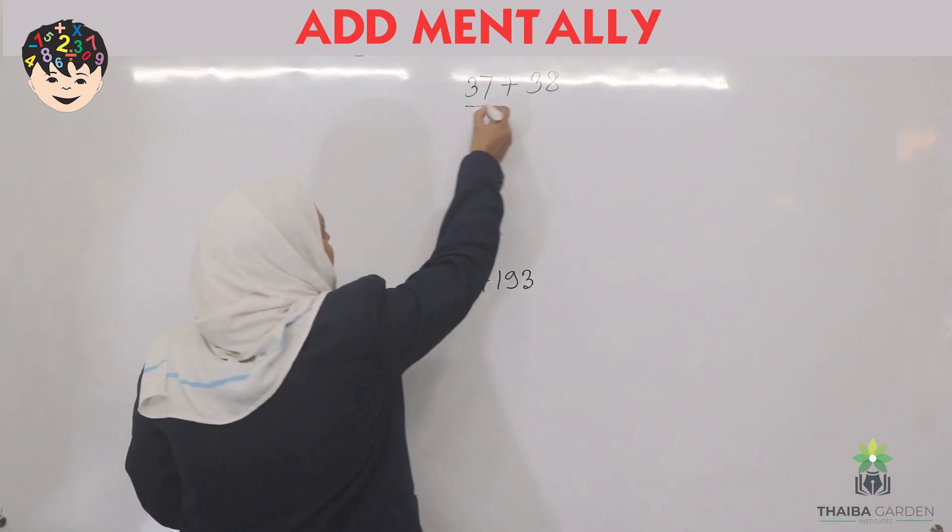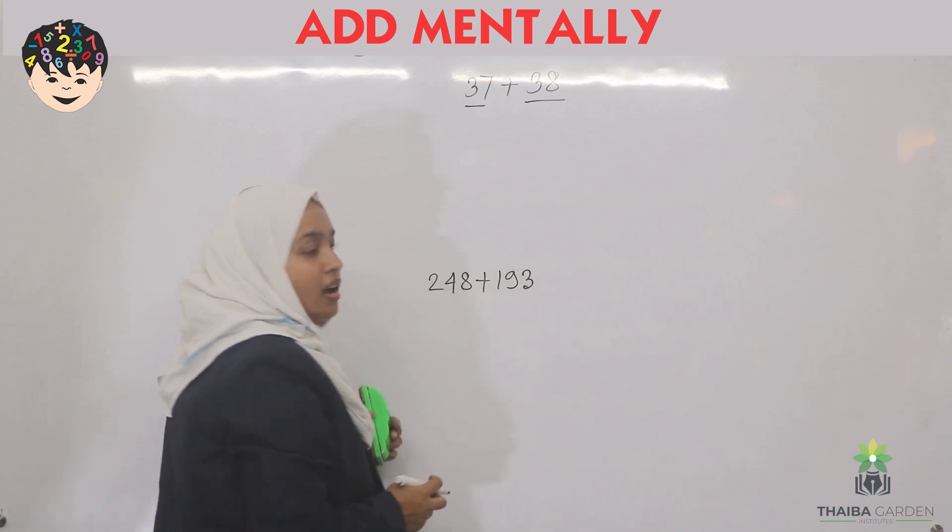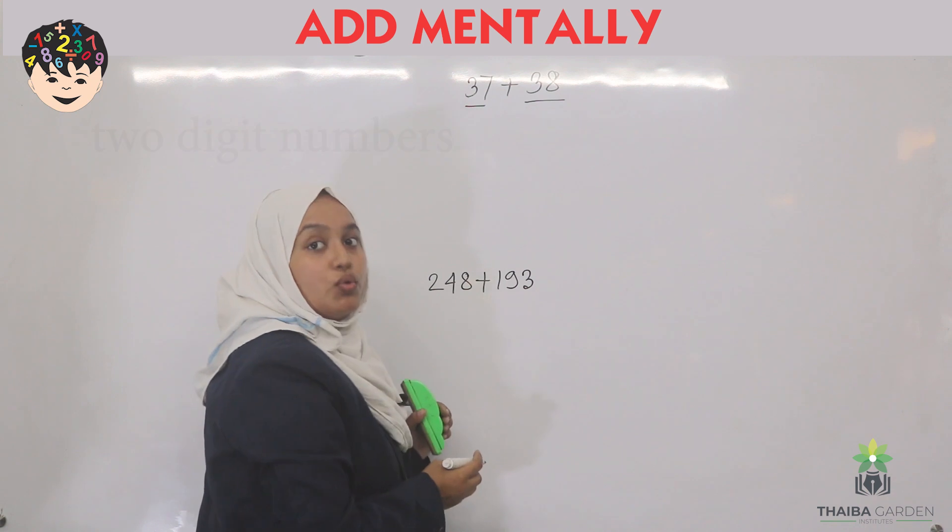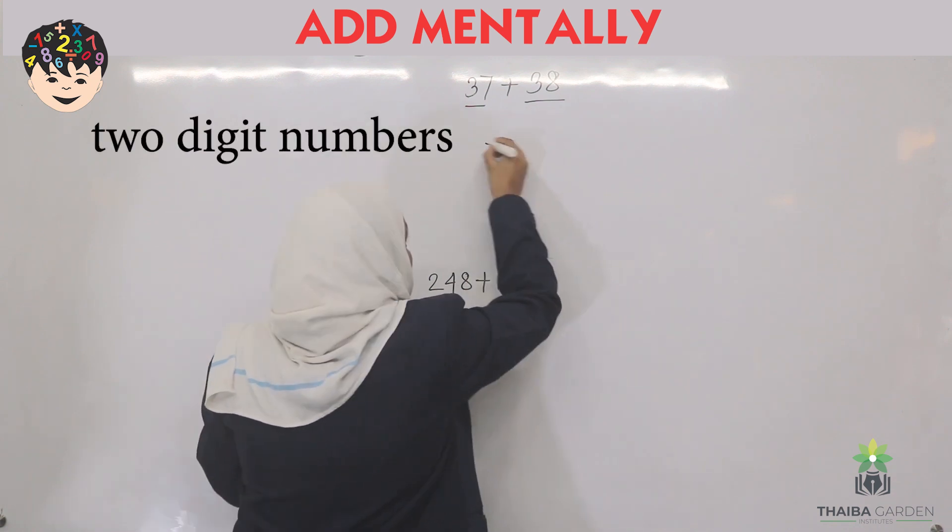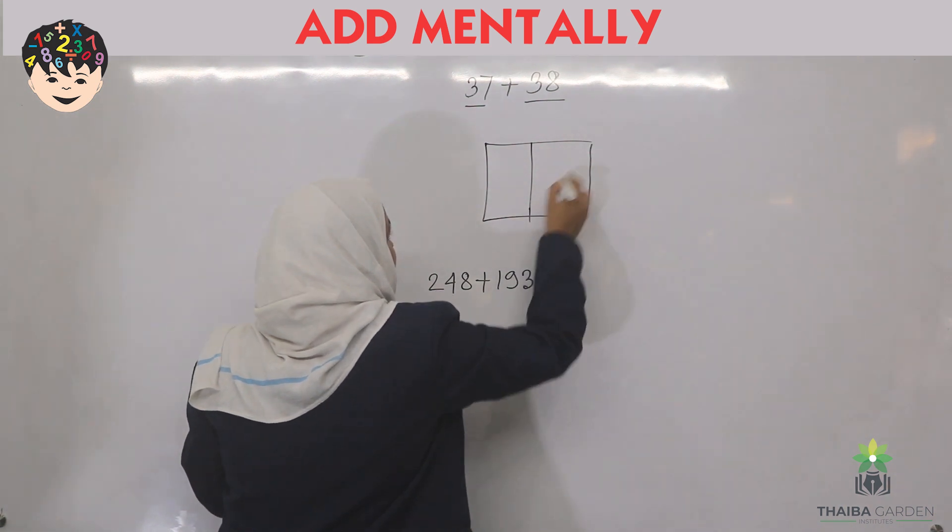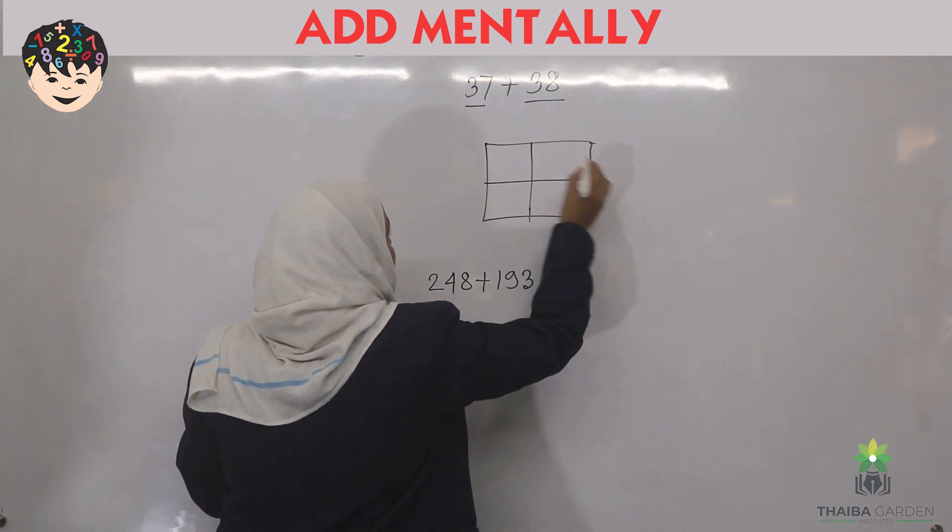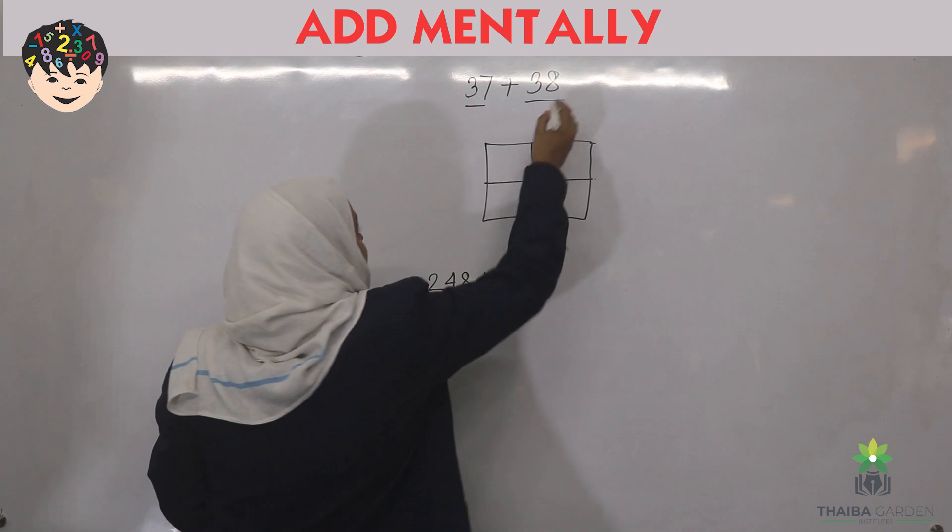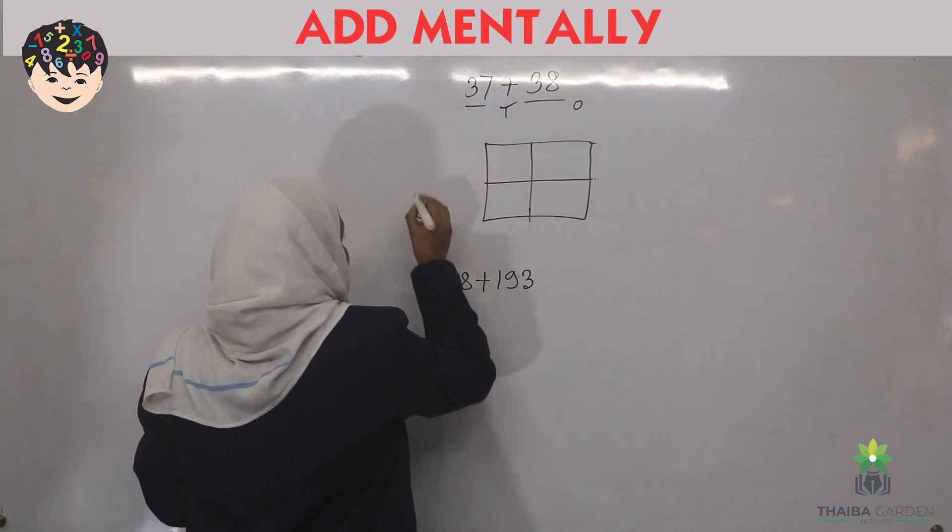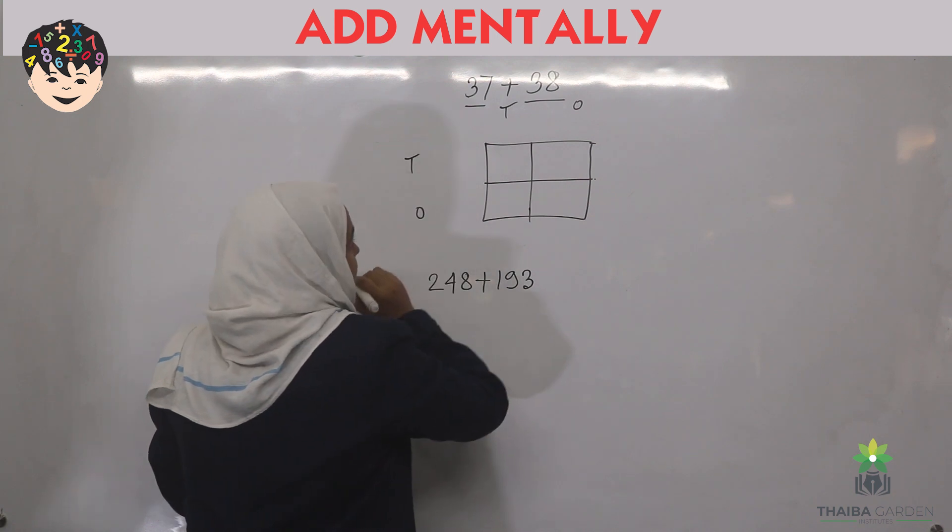Here is 37 and 38. How we add it mentally? Because the two numbers are two-digit numbers, so we need a box like this. And you assume it as one's place and it is ten's place, and here it is one's place and here it is ten's place.